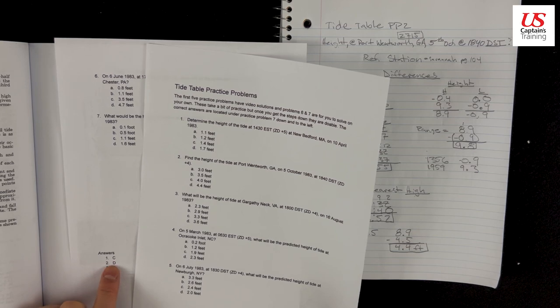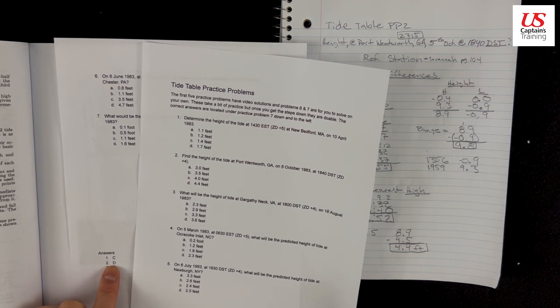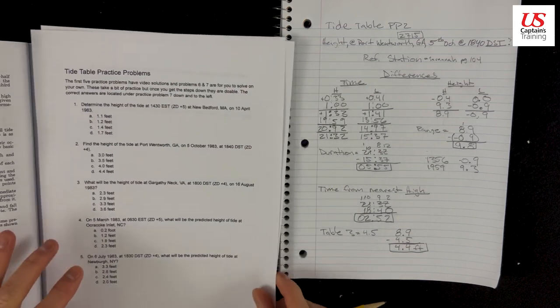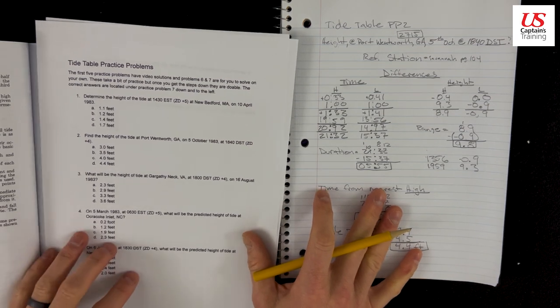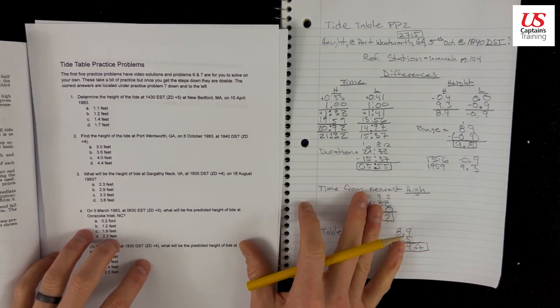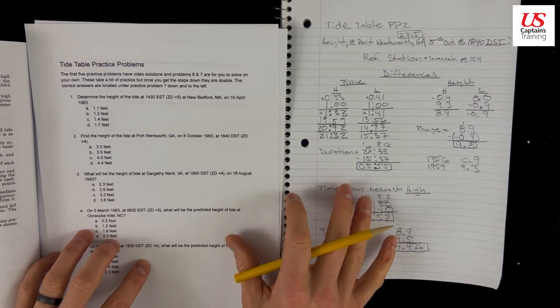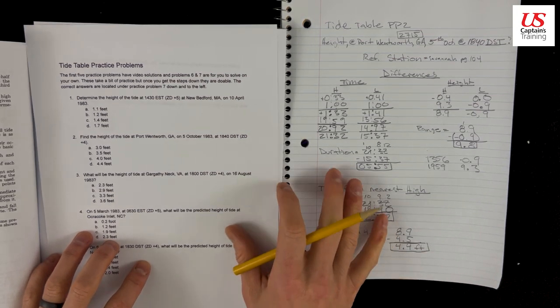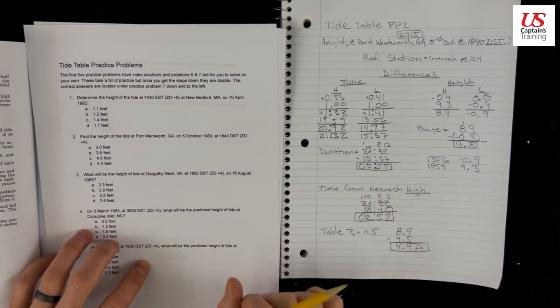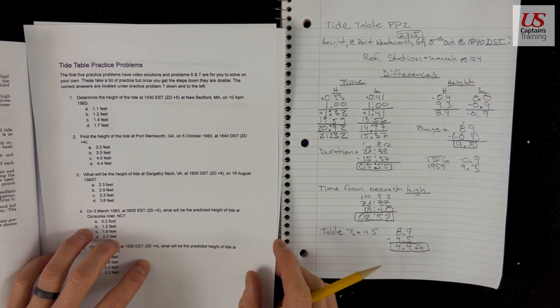There we are. 2 is D. A couple more. Three more of these I'll solve with you. And then you'll do two on your own. Don't get discouraged by these. Just keep patiently chugging away doing all this adding and subtracting and you'll get this. You just got to get the steps down. See you on number three.